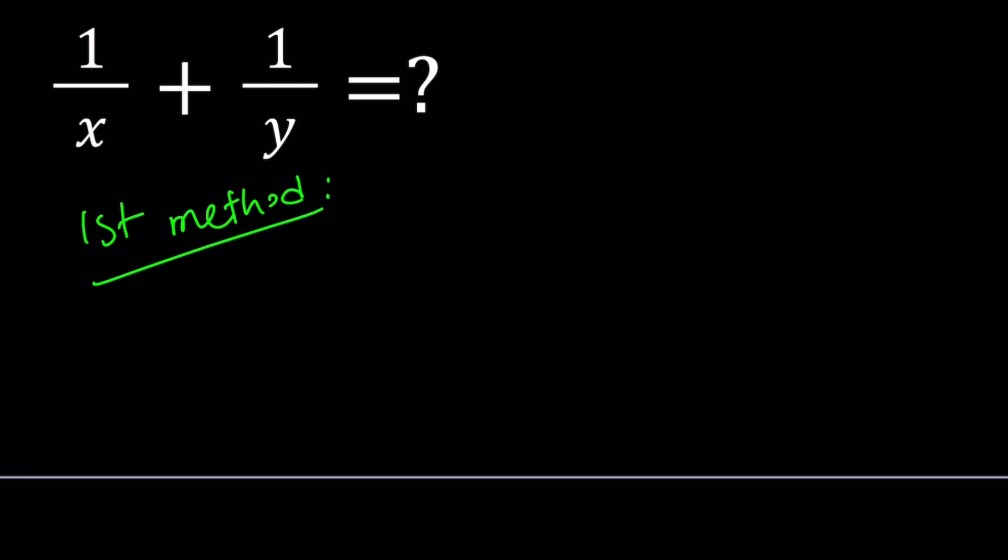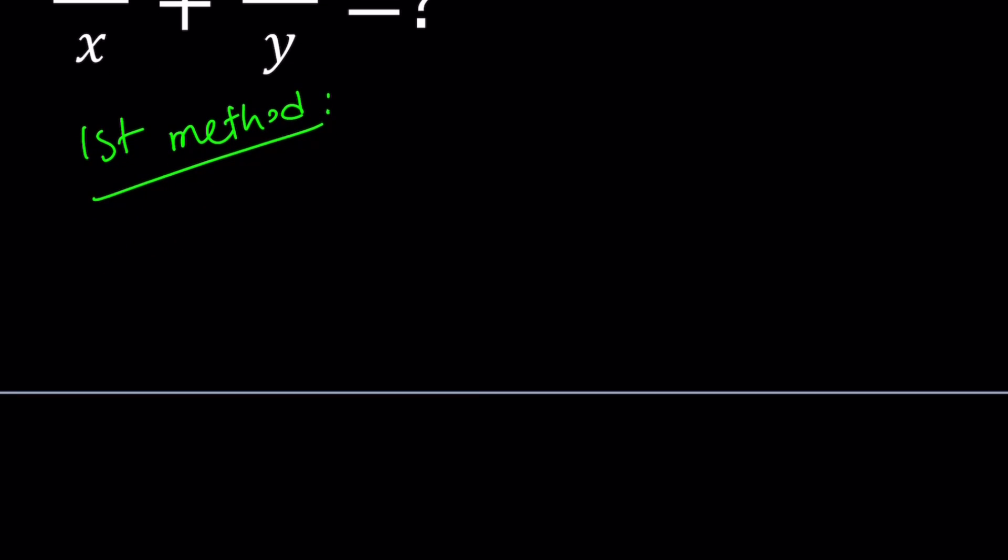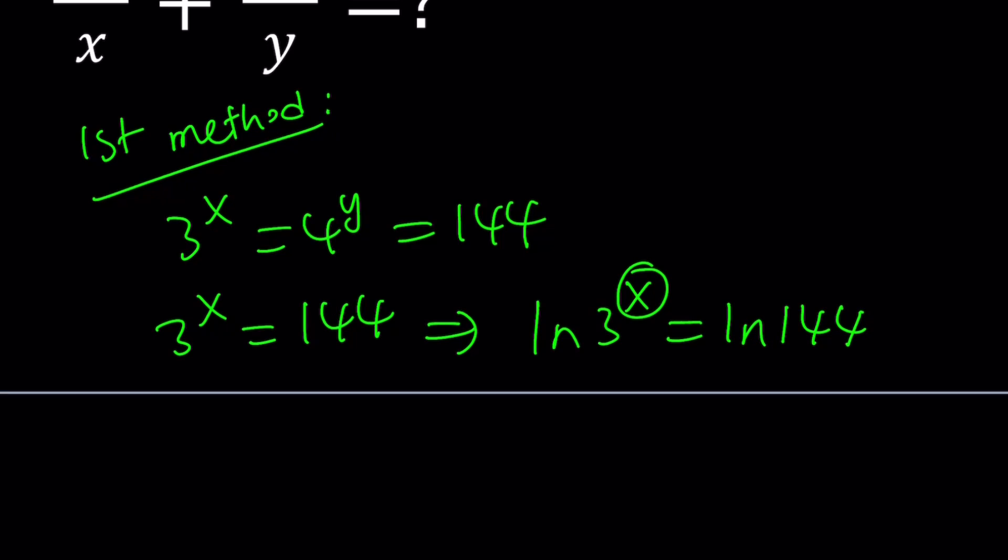My first method is basically going to take advantage of logs. We have 3 to the x equals 4 to the y equals 144. We can go ahead and take logs here because we have 3 to the x equals 144. We can ln both sides. That's going to give us ln 3 to the x equals ln 144. And we can bring the x down. That gives us x ln 3 equals ln 144.